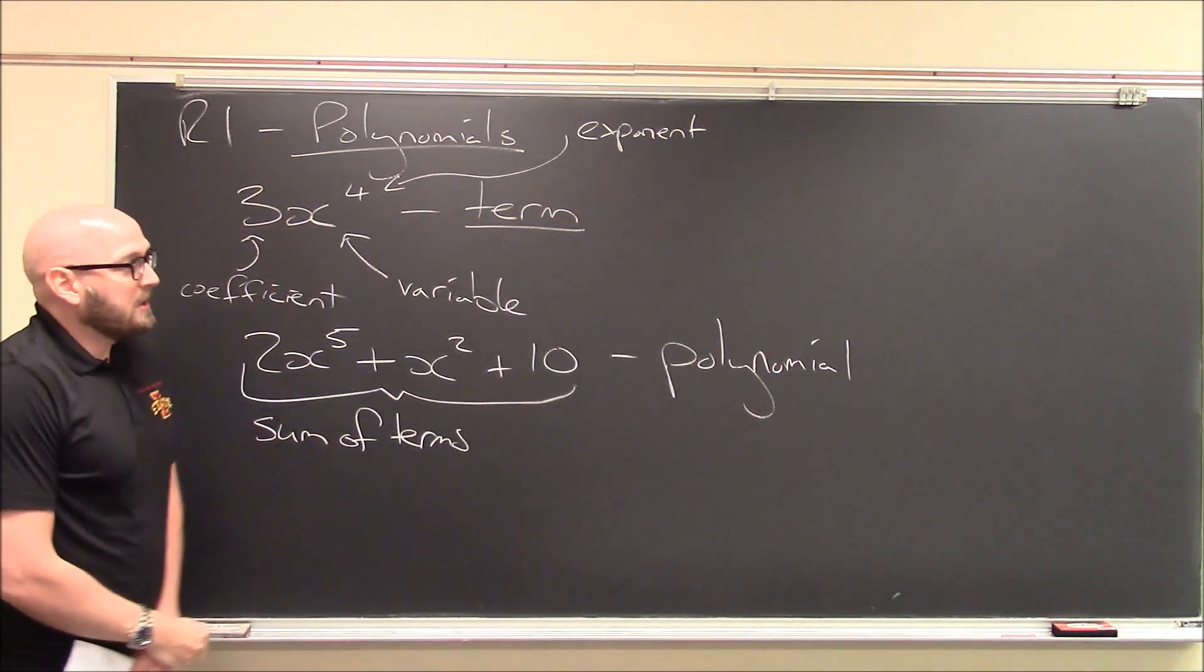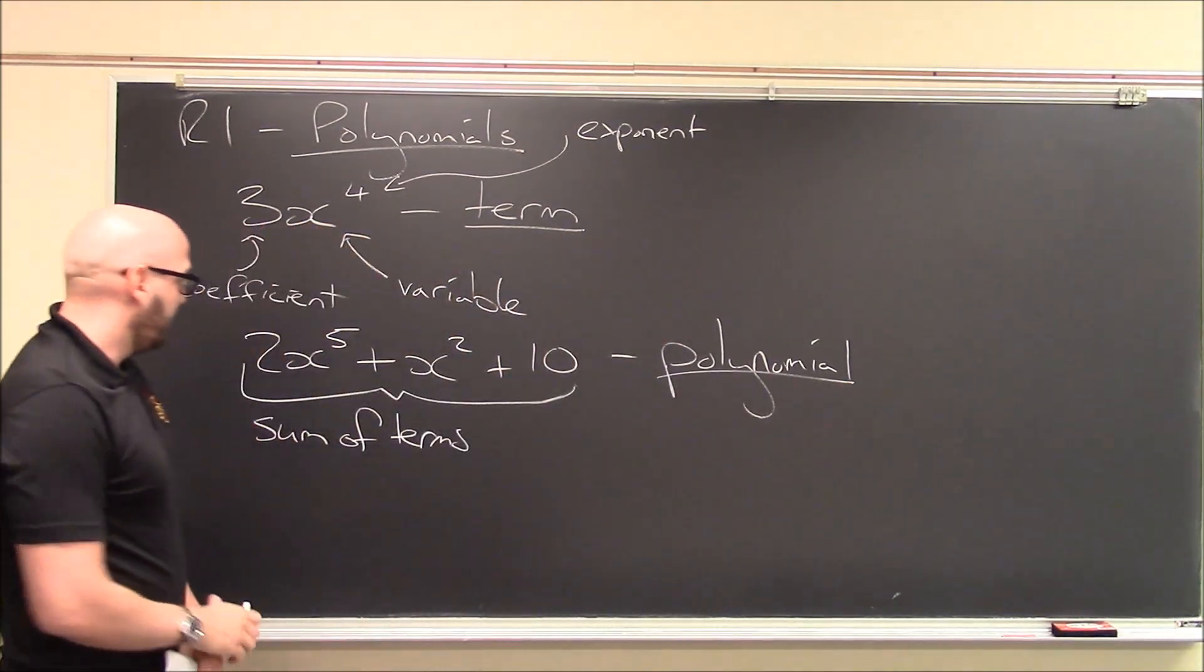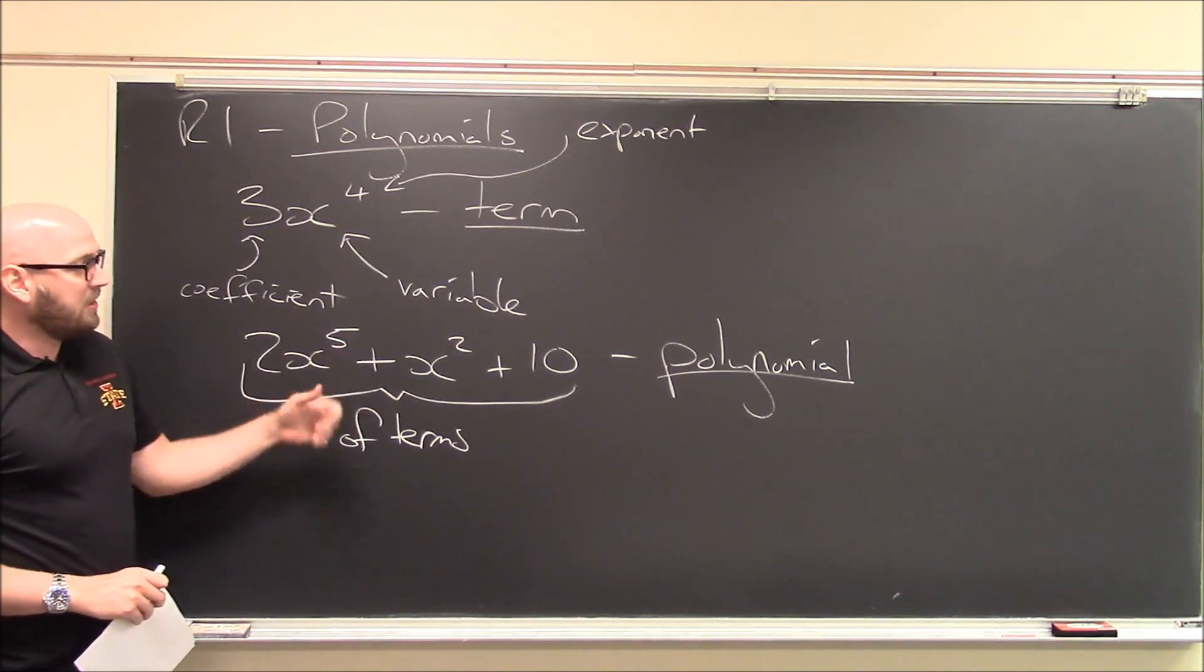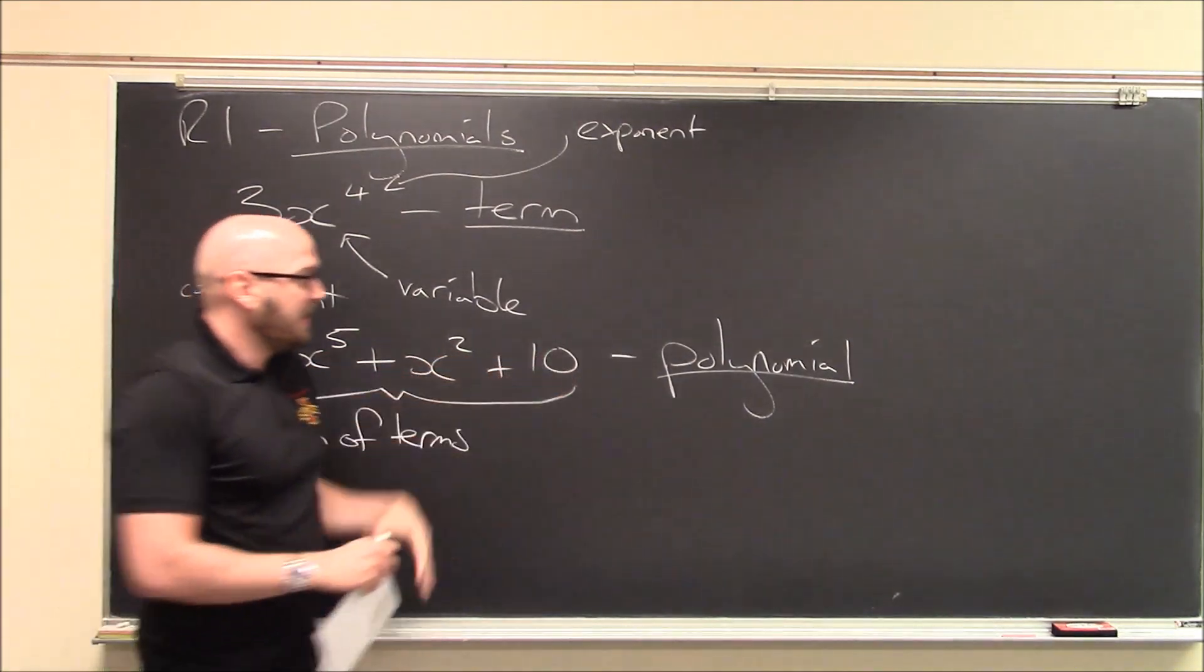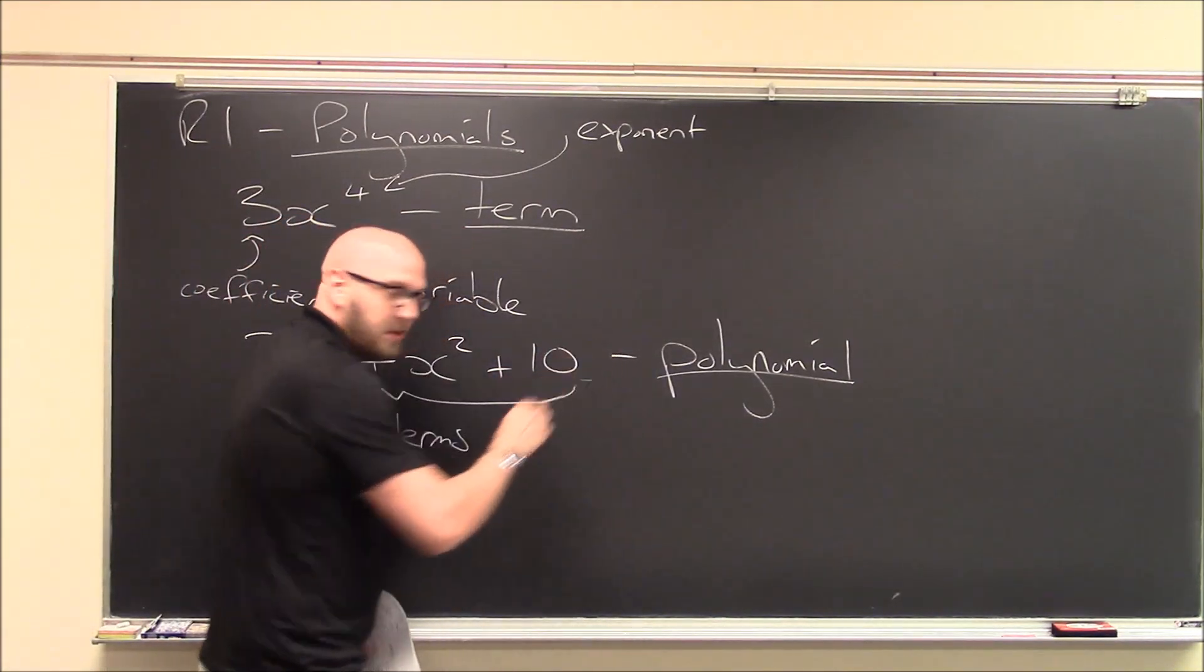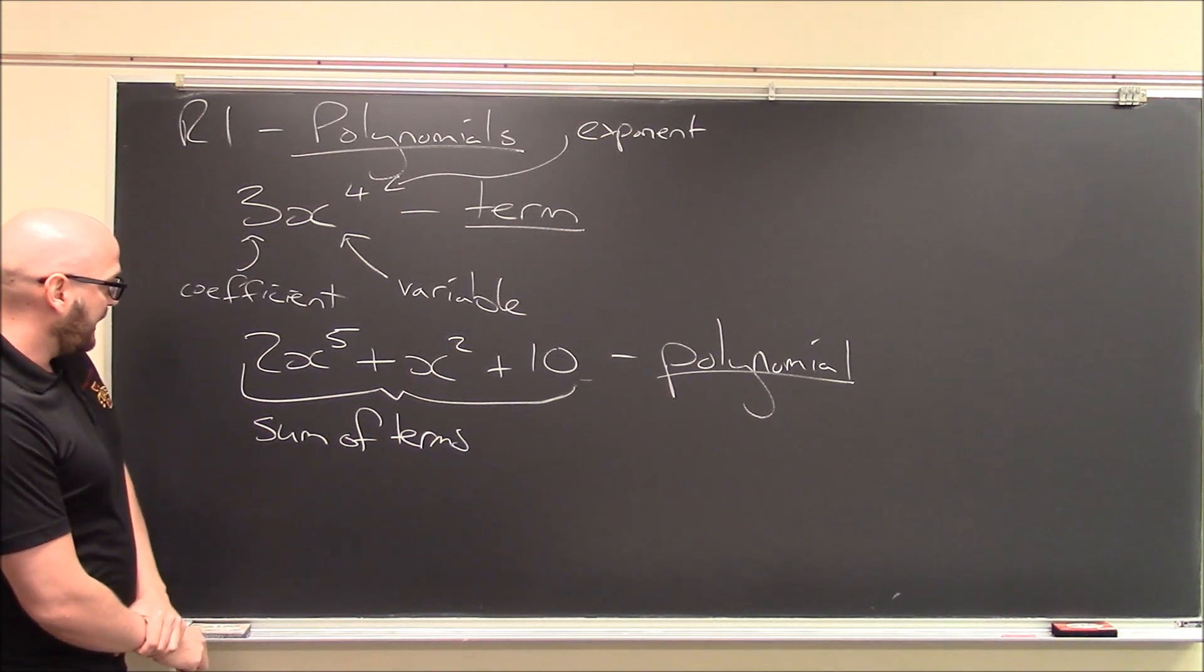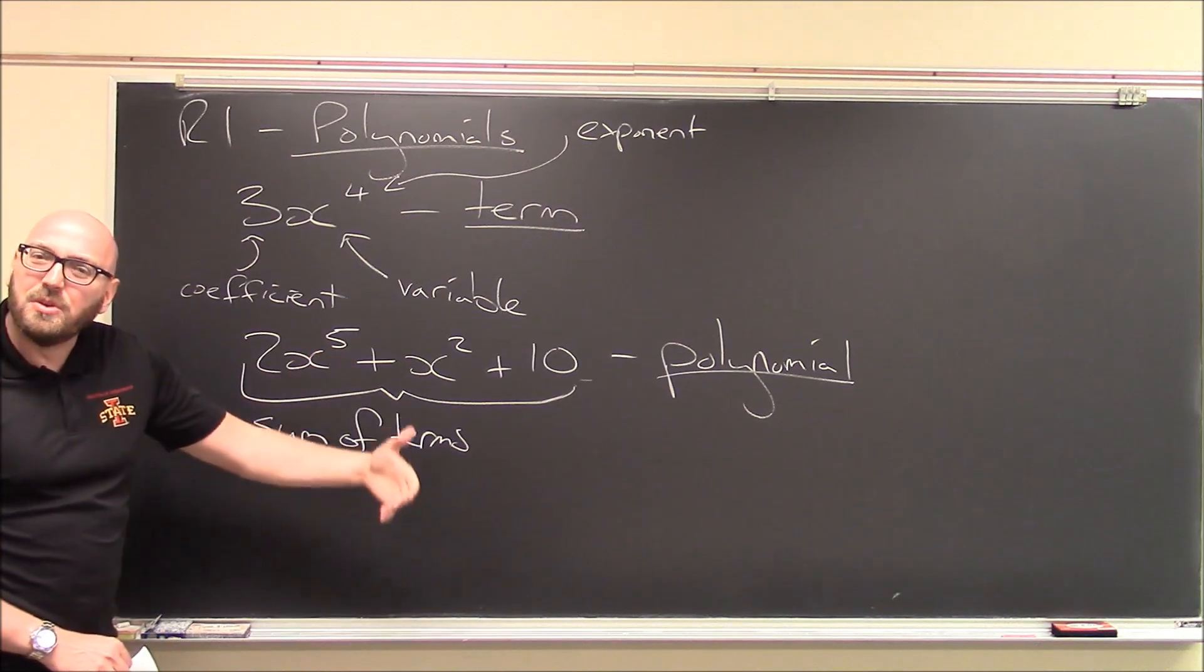Now, I do need a few more conditions, though. I need a few more conditions on my terms. So it's really not just a sum of terms. It's a sum of terms where my exponents are all non-negative. The 5 is a positive number, 2 is a positive number. This is really, I have x to the 0 here. 0 is not a negative number. And I need my exponents to be whole numbers.